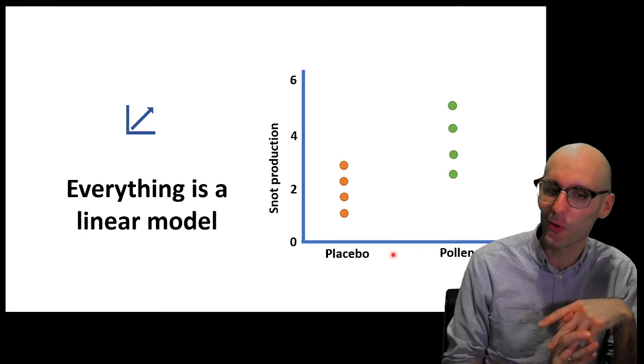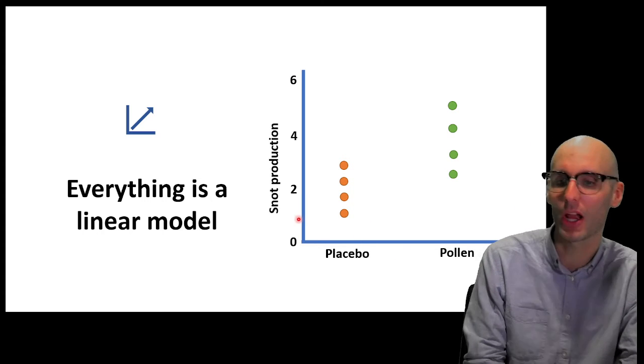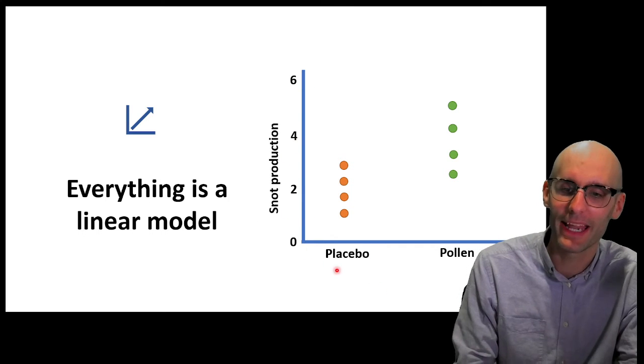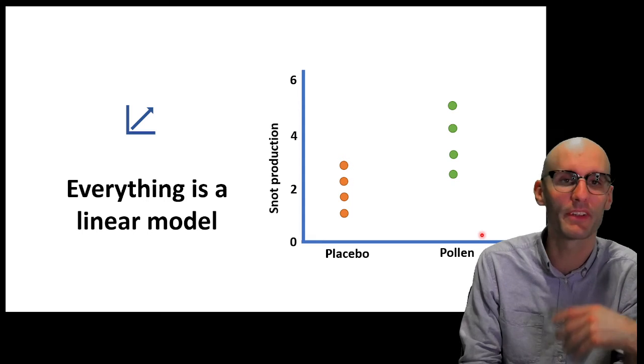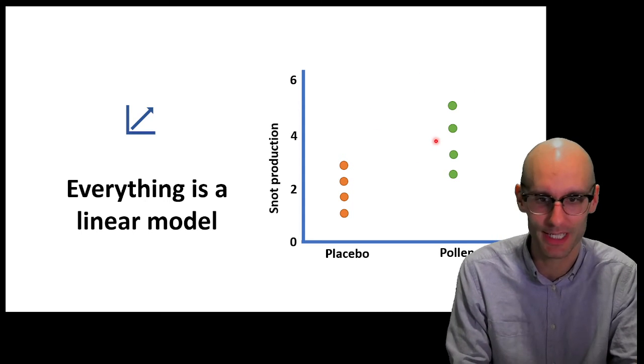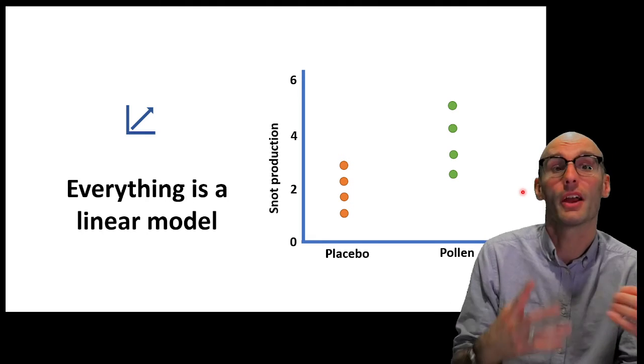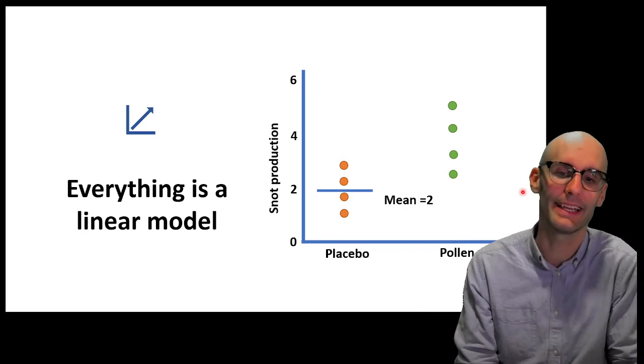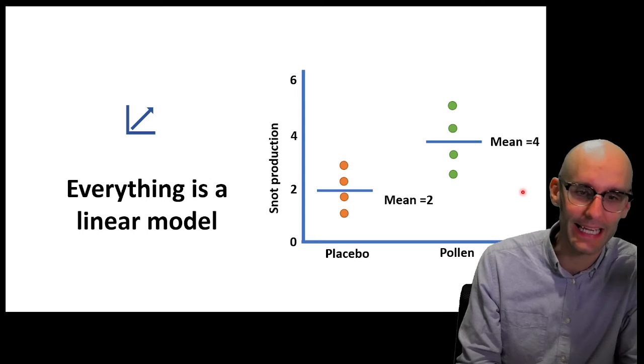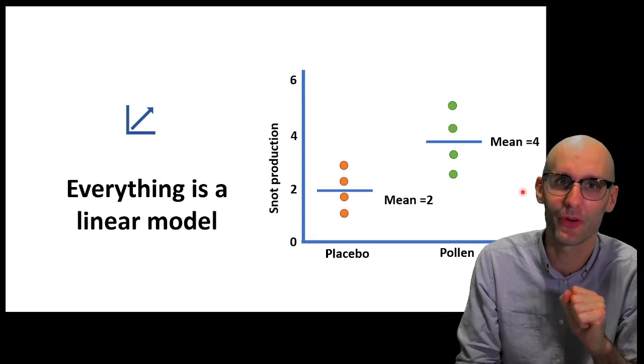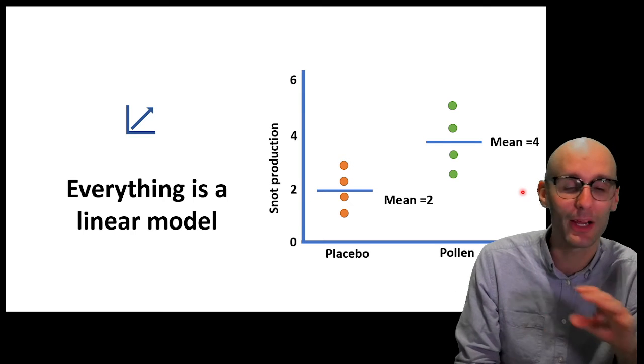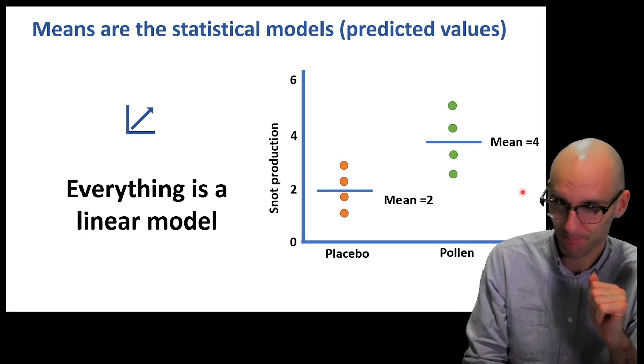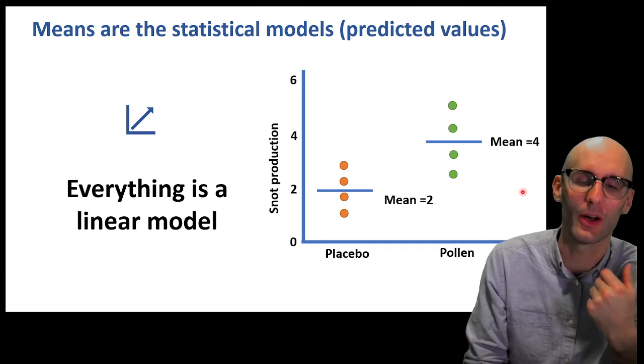So let's now compare apples with apples. Let's try run a linear model on this after we've run a t-test. So here we go. We've got snot production on the y-axis. I'm assuming that's in maybe mils, hopefully not liters. And here we have placebo and here we have pollen. So we've given our samples a sniff of pollen to see if that bumps up the snot production. Now, let's run what a regular first-year statistician lecturer might tell you to run. Let's run a t-test. To do that, you need the mean of this. You need the mean of that. Now, these are the predicted values of any future sample. The mean equals 2 and the mean equals 4.